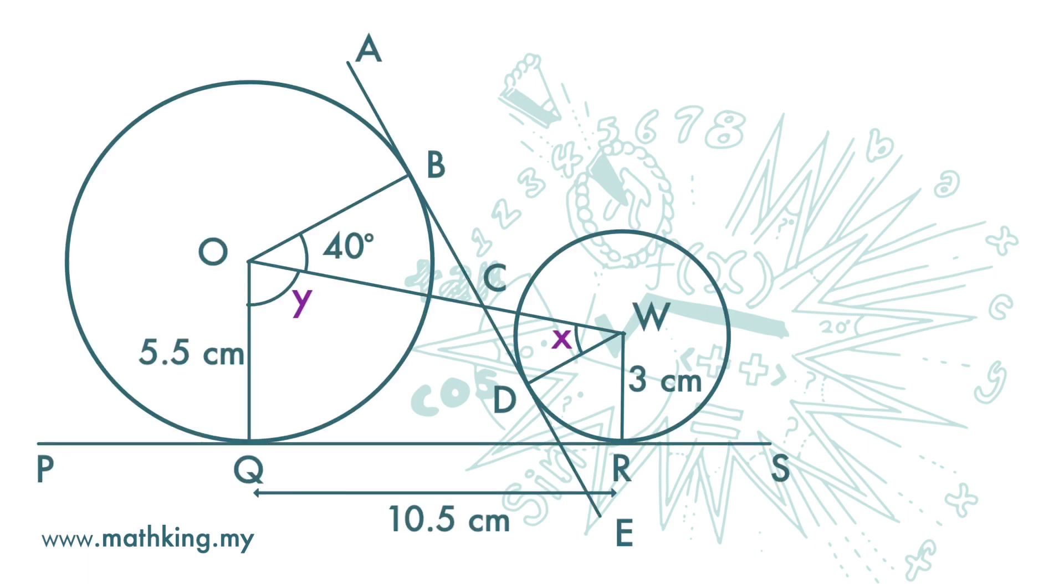Now, let's look at this question. Lines AE and PS are common tangents to the circles. Find X and Y.